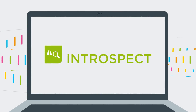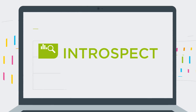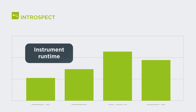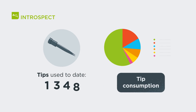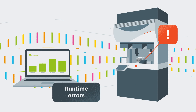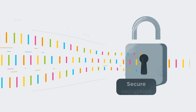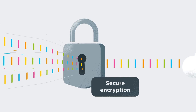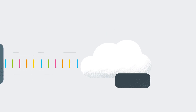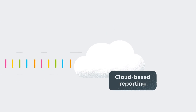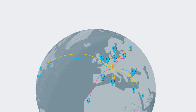TCAN's Introspect software helps you keep track of what's happening in your lab. It gathers direct information on instrument use, tip consumption, even runtime errors, and more. All utilization data is stored in one place using encryption, so you can securely access your online dashboards from anywhere in the world.